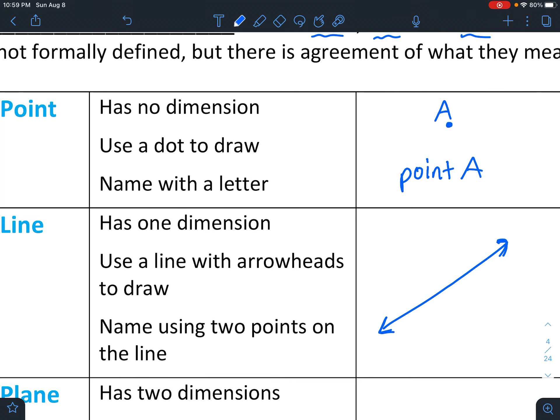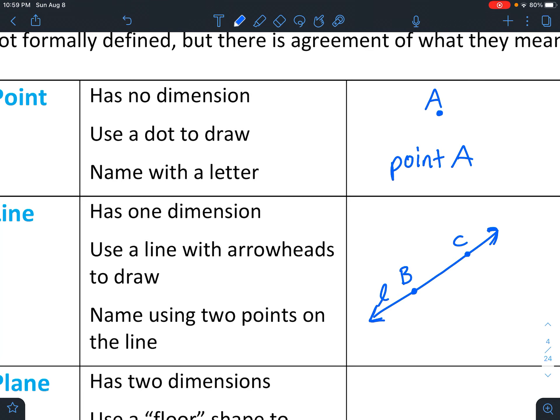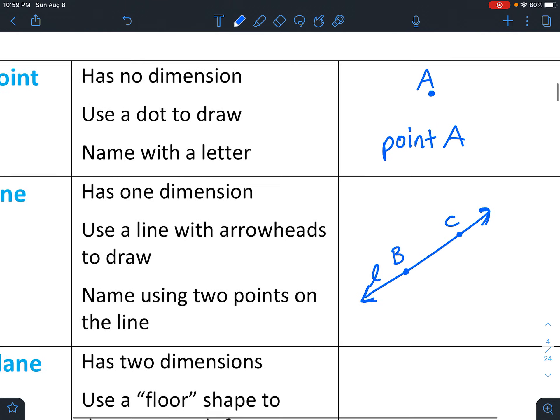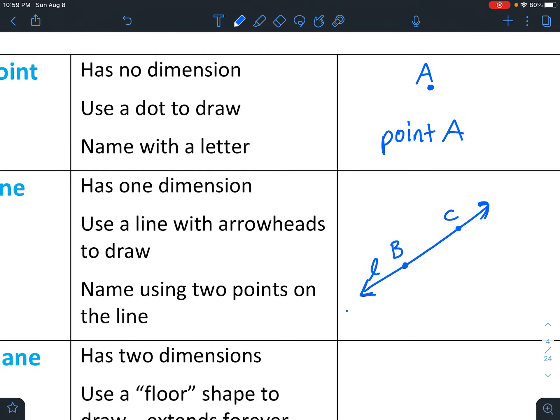And it could be labeled with a little letter at the end. And most often, though, it's labeled with two points because two points define a line. You might have the letters B and C. Like any letters will work. And the way you could talk about it would be line L, or you could say BC.